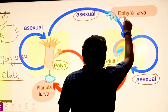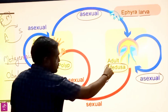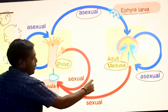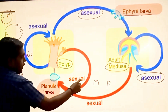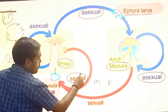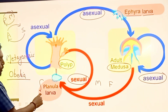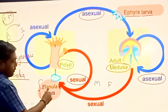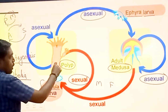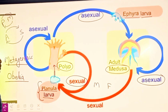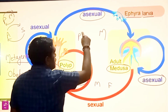The larva stage here is called ephyra larvae. The adult medusa — male and female — undergo sexual reproduction. When male and female gametes fertilize, it forms a zygote, and the zygote develops into planula larvae. This planula larvae further develops into a polyp stage, which again undergoes asexual reproduction.